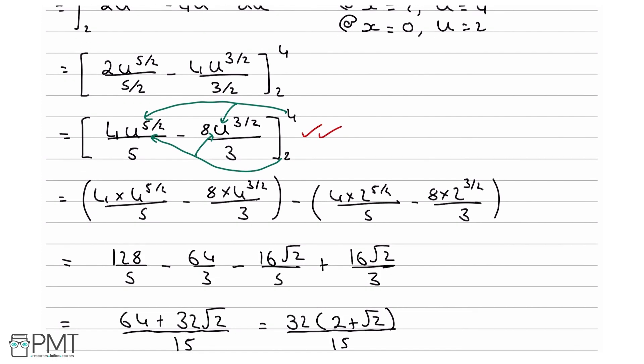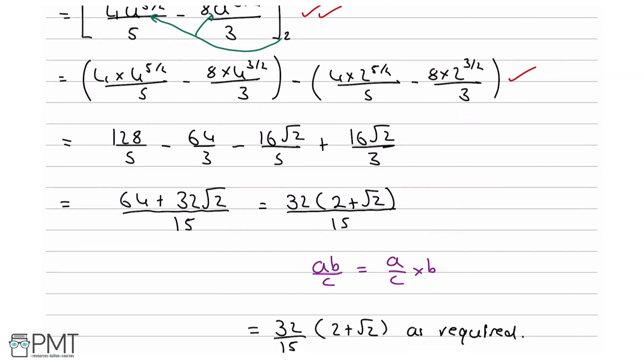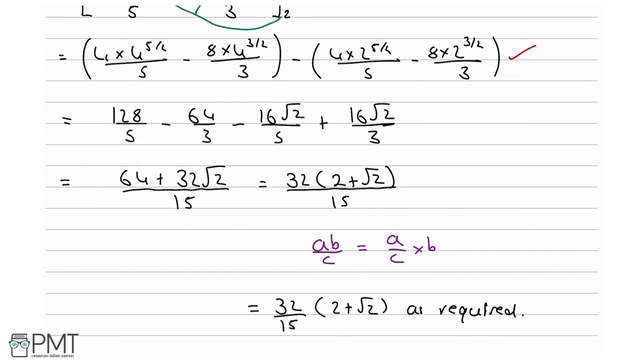Your sixth mark comes from correctly putting in the limits and solving it, and your seventh mark and final mark comes from getting 32 over 15 times (2 plus root 2) as required.